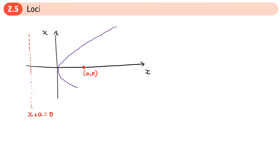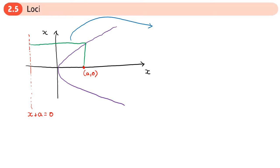If we take a perpendicular distance from the directrix and join that to the focus, where they meet, these distances are meant to be the same. Obviously they don't look the same because this isn't a very accurate diagram, but they are meant to be equal.